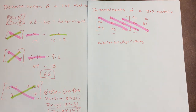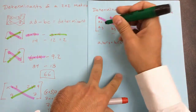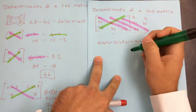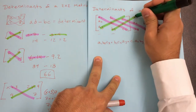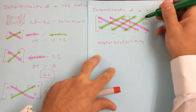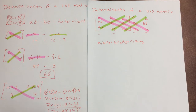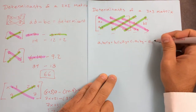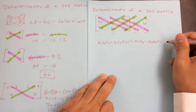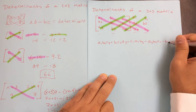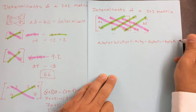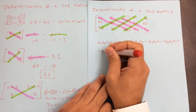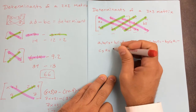Notice on the 2x2, I subtracted the ones going up and to the right — same thing happens here. I'm going to multiply those diagonals and subtract each product. So it's going to be minus A3·B2·C1, minus B3·C2·A1, minus C3·A2·B1.